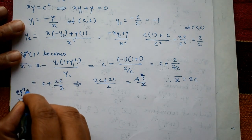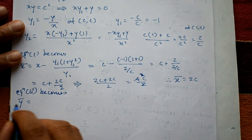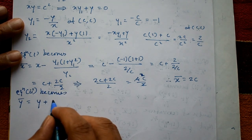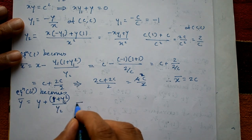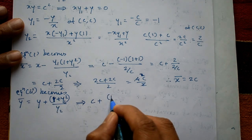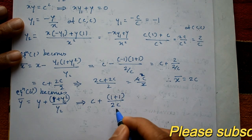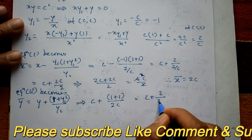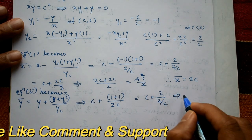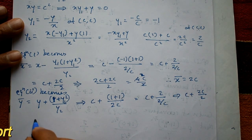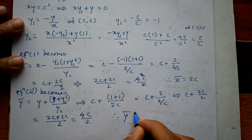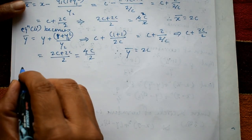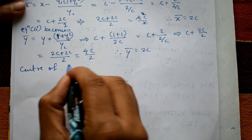Now apply equation 2 for ȳ. ȳ = y + [(1 + y1²)/y2] = c + [(1 + 1) / (2/c)] = c + [2 / (2/c)] = c + 2c/2 = (2c + 2c)/2 = 4c/2. Therefore ȳ = 2c.